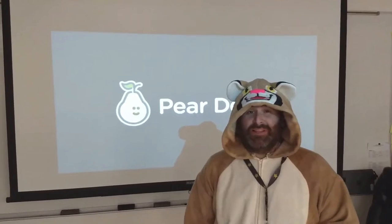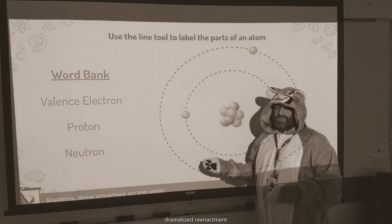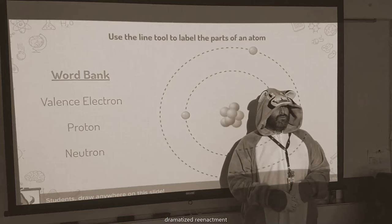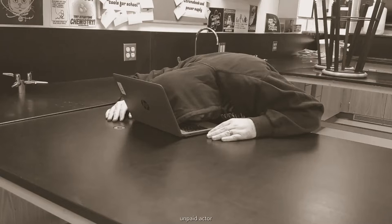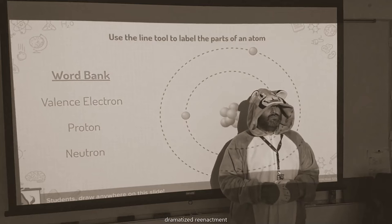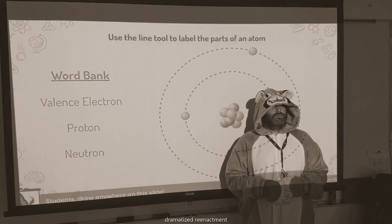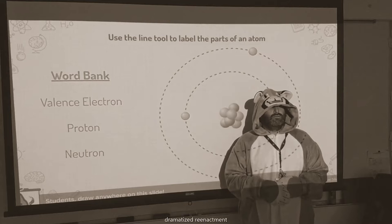Before Pear Deck came along, a typical lesson looked something like this. So, here we have a model of an atom. Does anybody know where the valence electrons are? Would anybody be willing to tell me where the valence electrons are? Does anybody want to volunteer to come up and show me where the valence electrons are? Anybody?